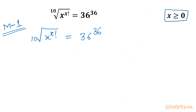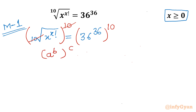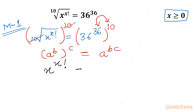Now I will raise both sides to the power 10. This 10th root and power 10 will cancel out. Using the exponent rule — (a^b)^c = a^(bc) — we can multiply the exponents on the right-hand side. So the left-hand side becomes x raised to the power x factorial, and the right-hand side becomes 36 raised to the power 360.